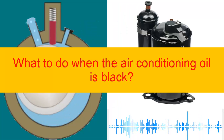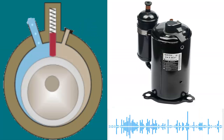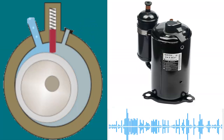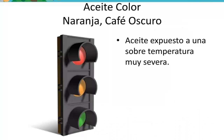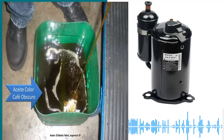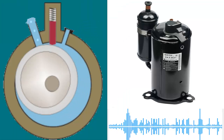4. What to do when the compressor oil is dark — here are some recommendations. The first thing to consider is to perform a complete cleaning of the air conditioning system. This involves removing the contaminated oil and cleaning the pipes and components.